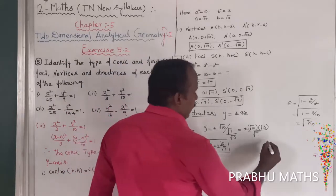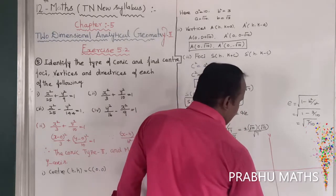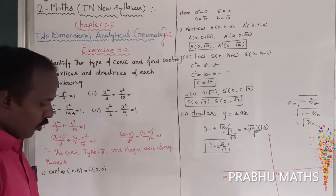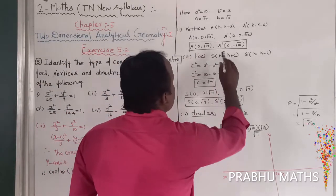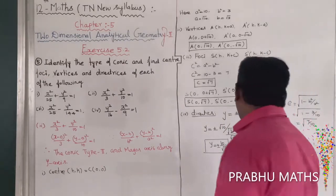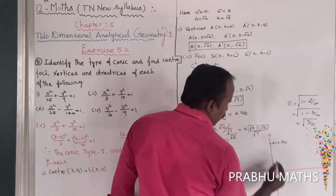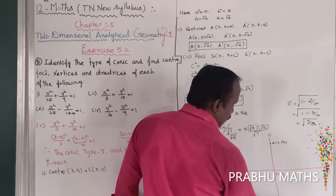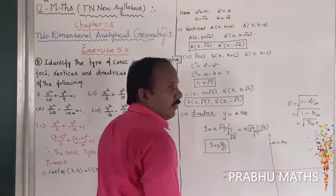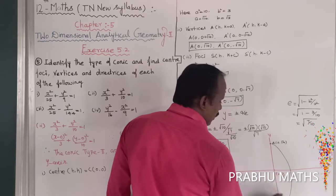Now let us draw the graph. This is the y-axis and x-axis, with origin at (0, 0). The vertices are at A (0, √10) and A' (0, -√10). Since √10 ≈ 3.2, we plot A above and A' below the origin along the y-axis to form the ellipse.